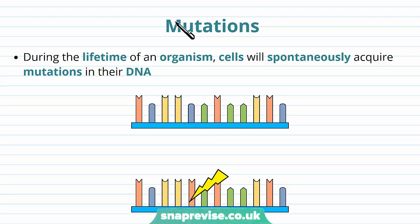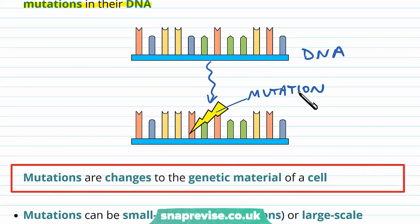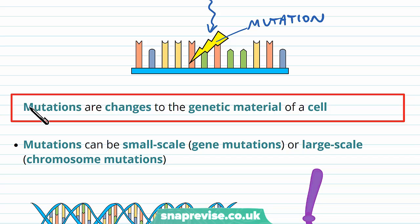Mutations are a major problem for our DNA. In the lifetime of any organism, cells can spontaneously acquire mutations in their DNA. The DNA is the genetic information of the cell — a series of bases in order to code for all of our proteins. A mutation is defined by a change to the genetic material of a cell. The genetic material can be the DNA, all of those bases in order from start to finish, and it can also be arranged in chromosomes.